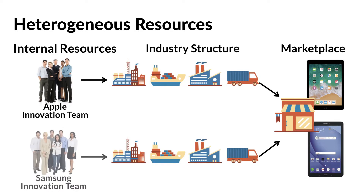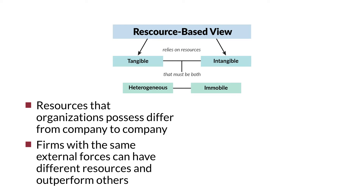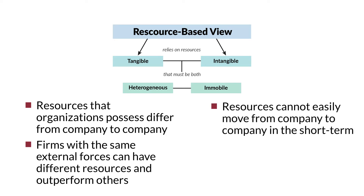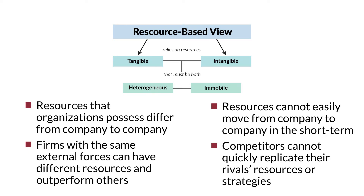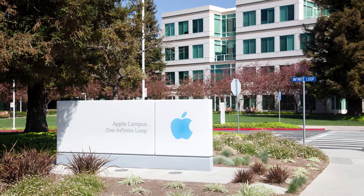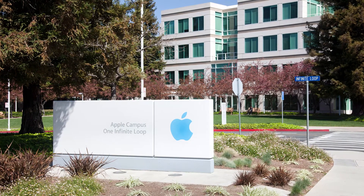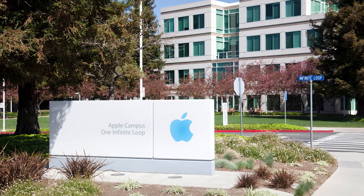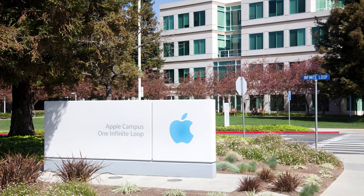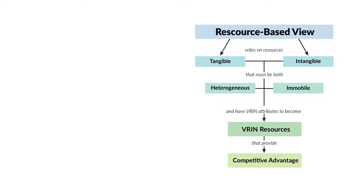The companies have heterogeneous internal resources that can explain their performance differentials. The assumption that resources are immobile simply means that resources cannot easily move from one company to another in the short term. Immobility also means that competitors cannot quickly replicate their rivals' resources or strategies. For example, many companies would like to have Apple's innovation capabilities, but that strategic resource takes a lot of time and money to develop and cannot be quickly duplicated — it is immobile. According to RBV, resources must also have very specific characteristics to create a competitive advantage. The acronym VRIM helps us remember that resources must be valuable, rare, inimitable, and non-substitutable.